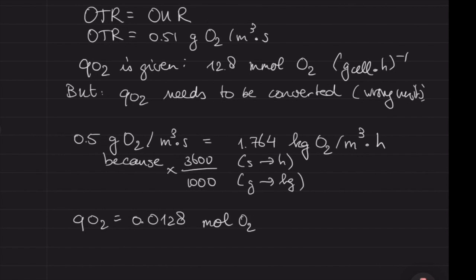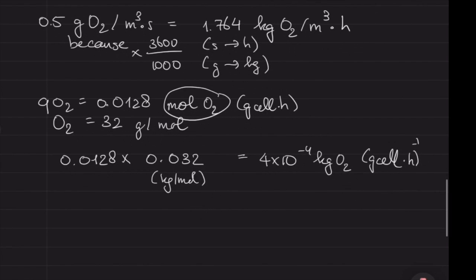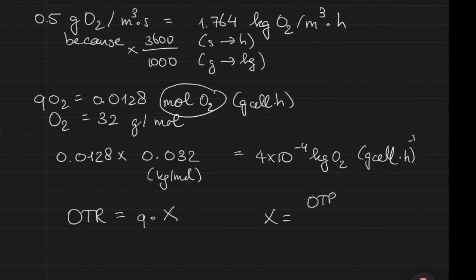Now we look at qO2. First, account for the molar mass of oxygen, which is 32 grams per mole. We also convert this to kilograms. You'll see we get an answer in kilograms of oxygen per gram of cell per hour. Now we have the right units. OTR is in kilograms per volume per hour, and the other is also kilograms of oxygen.